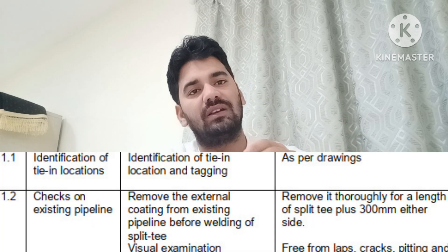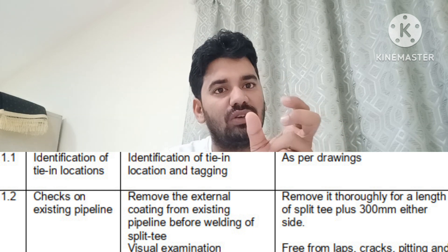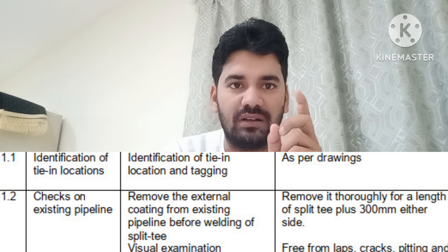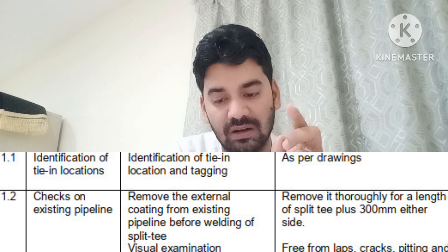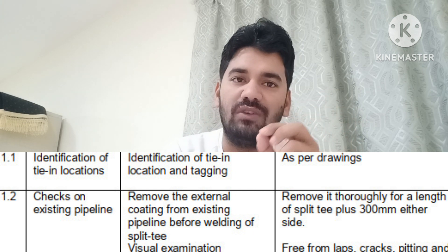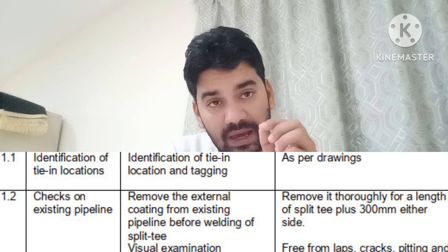I will define the activities, characteristics to be checked, and acceptance criteria. First activity: identification of the tie-in location — identifying where you want to tie in the joint and the hot tap location. Tagging means you need to install a tag for identification, as per domain. When you visit that location, the tag must be available and placed as per domain.